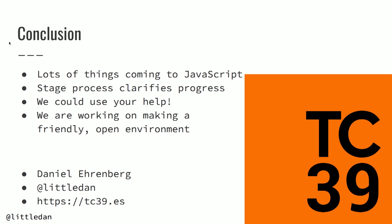Overall, lots of things are coming to JavaScript and I hope you like them, and I hope to have your help in making these things better. The stage process helps clarify where things are — they're not all equally decided. The stage four things are in the standard; the stage one things, we're just chatting about them and trying to figure it out.